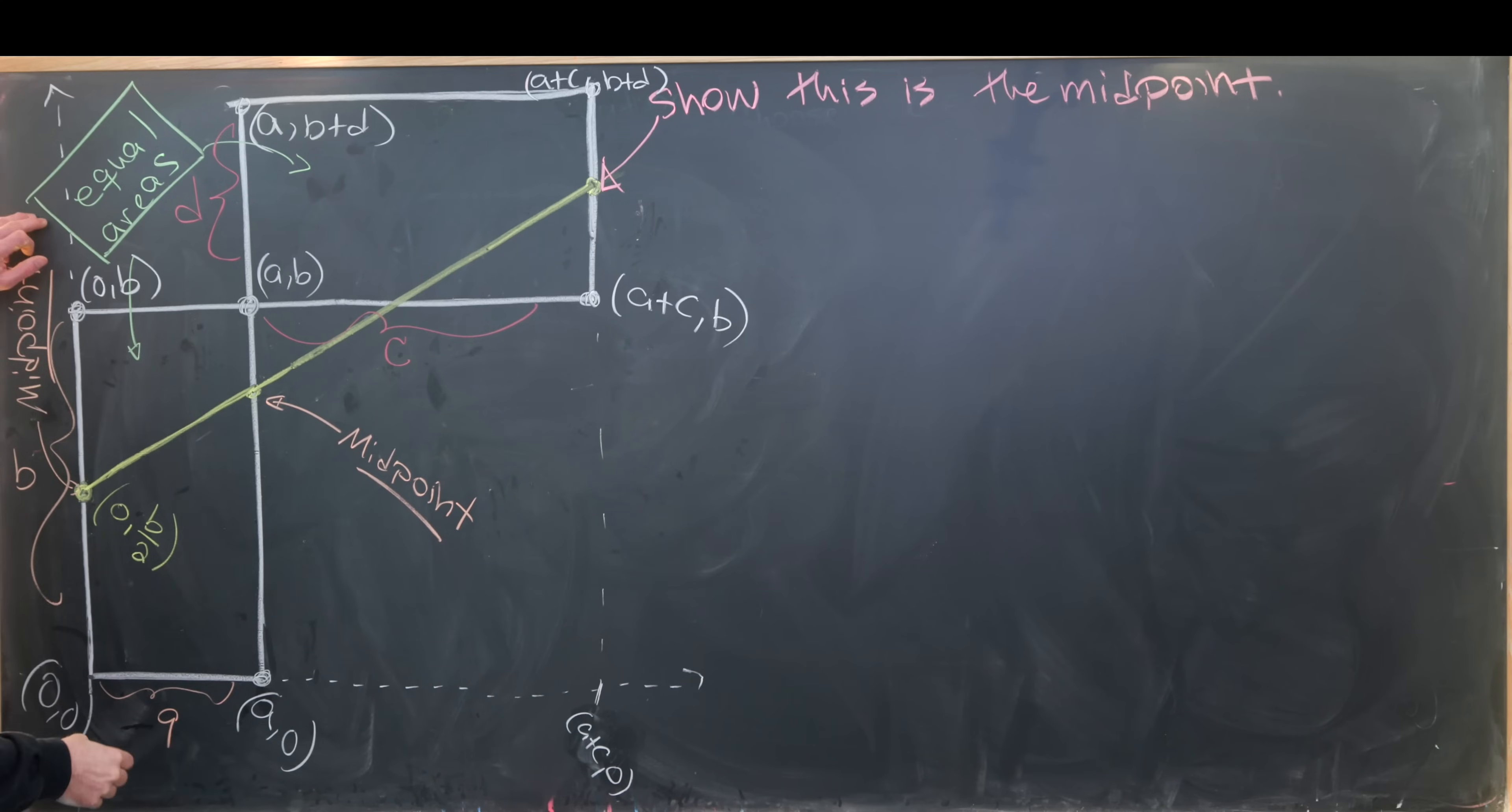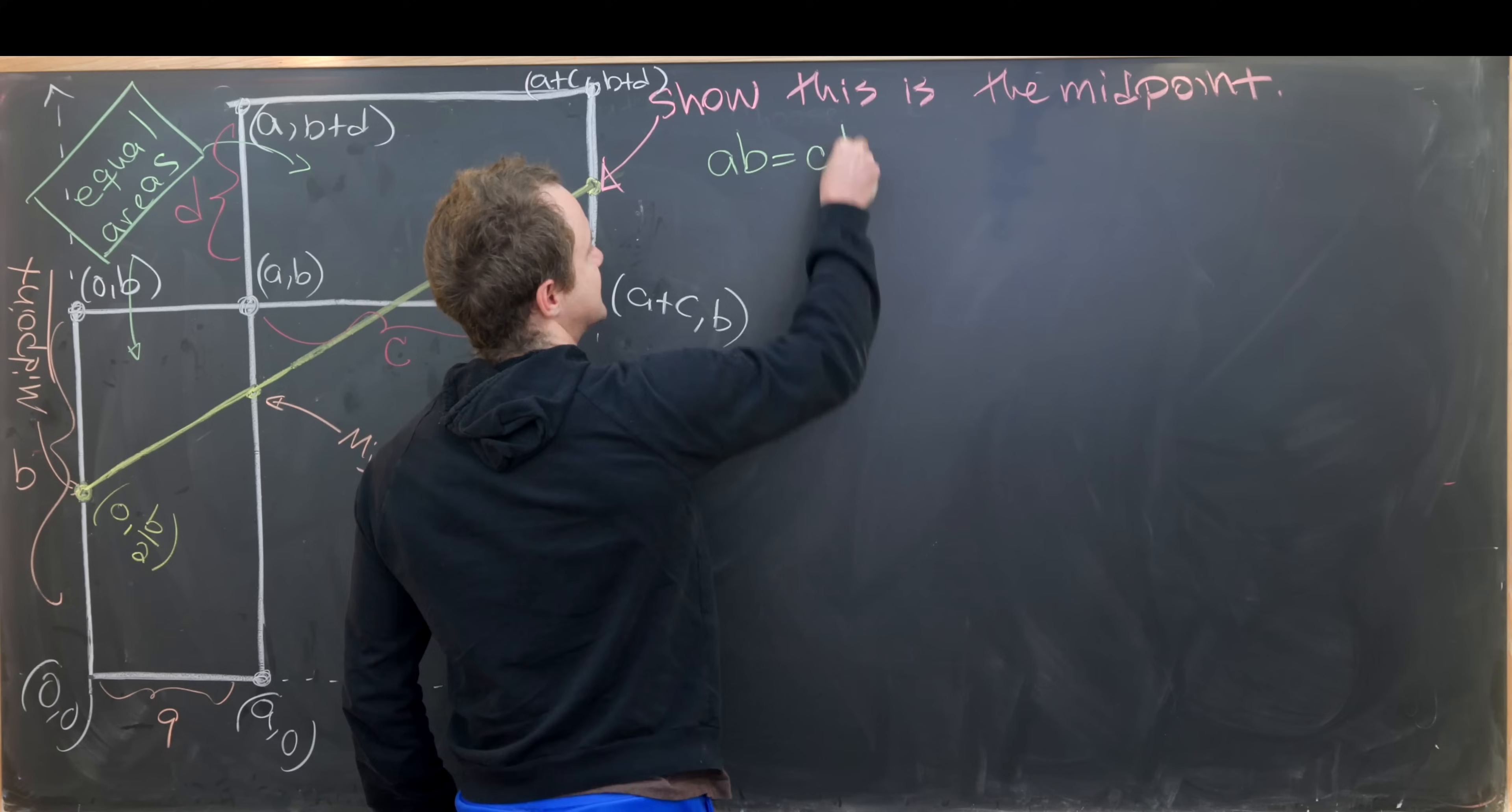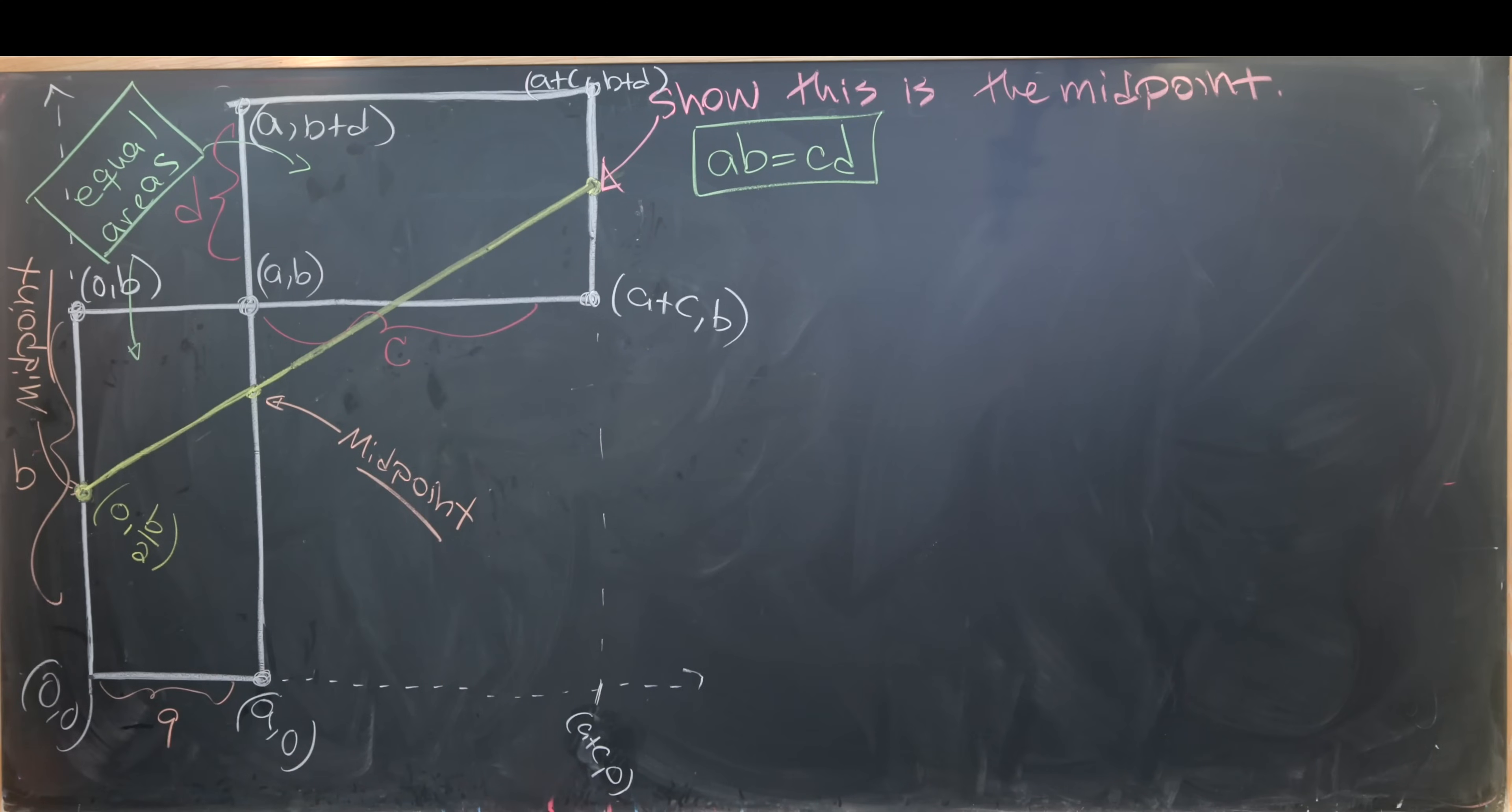Notice that we're given this equal area condition, which means that ab = cd. So I'll put that in the same color so that we can see it's coming from the same point. We've already calculated this midpoint (0, b/2).